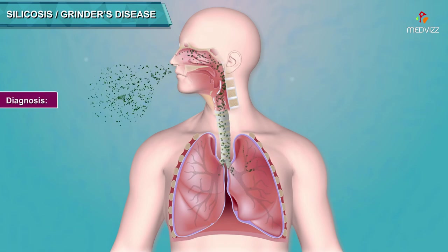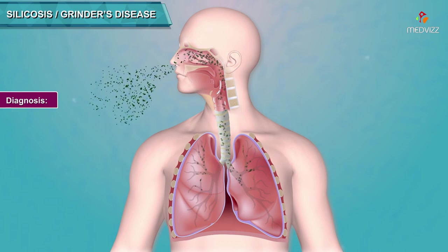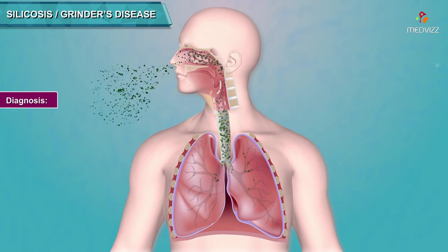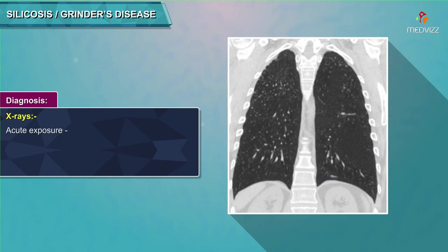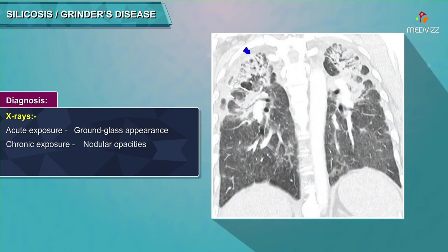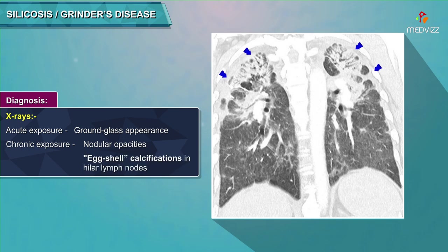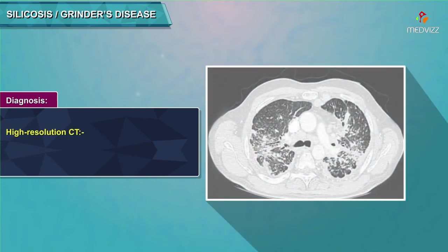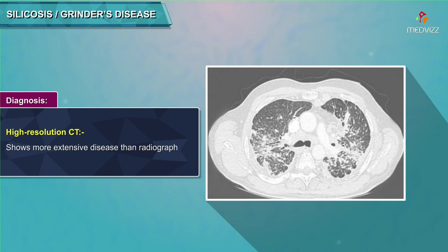Diagnosis: The radiographic features of silicosis may be much more striking than the patient's complaints or pulmonary function abnormalities. Chest X-ray findings: acute exposure shows a ground-glass appearance in all lung fields; chronic exposure shows nodular opacities with concentric layers of collagen, with or without central cavitation, with mid or upper zone predominance. Eggshell calcifications are seen in the hilar lymph nodes — a rim of dystrophic calcification simulating an egg shell. HRCT is helpful in revealing this pattern and may show more extensive disease than the plain frontal chest radiograph.